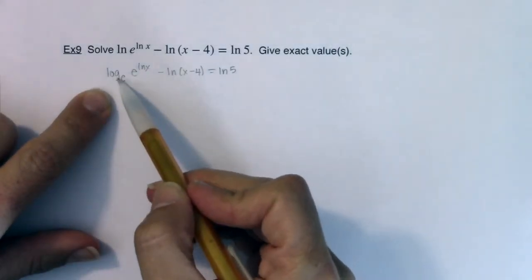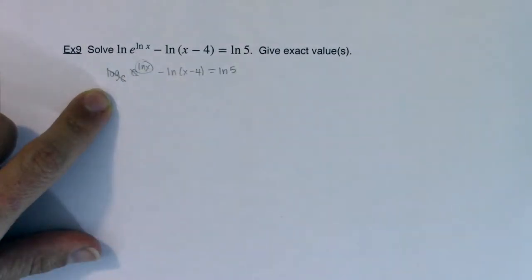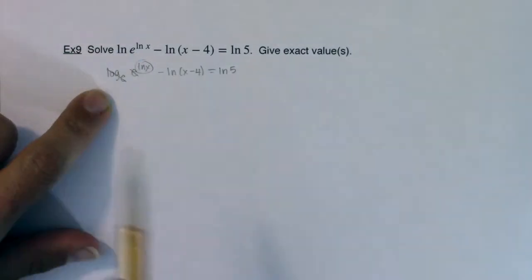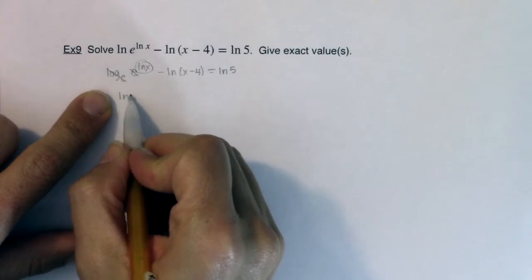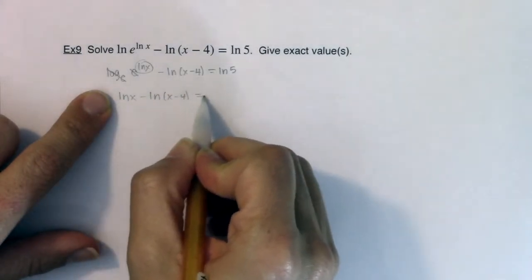When the base of your logarithm and the base of your power are the same, the only thing that survives is that exponent. And another way of just thinking of that is when you see an ln and e together like this, they cancel out. So here I have ln x minus ln of x minus 4 equaling ln 5.